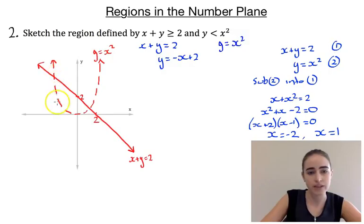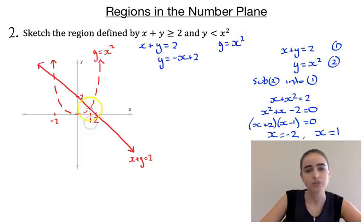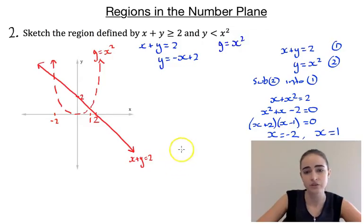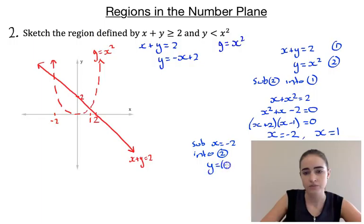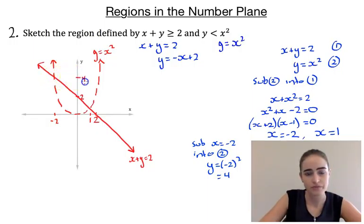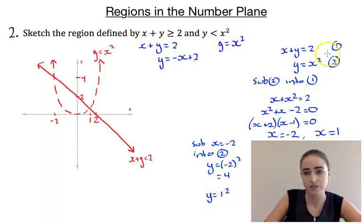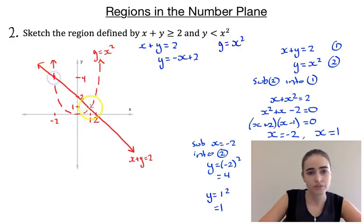That gives us the x-coordinates of the intersection points. Substituting each back into equation 2 to get the y-coordinates: substituting x = -2 gives y = (-2)² = 4, so that point is (-2, 4). Substituting x = 1 gives y = 1² = 1, so that point is (1, 1). Now we know the coordinates of both intersection points.